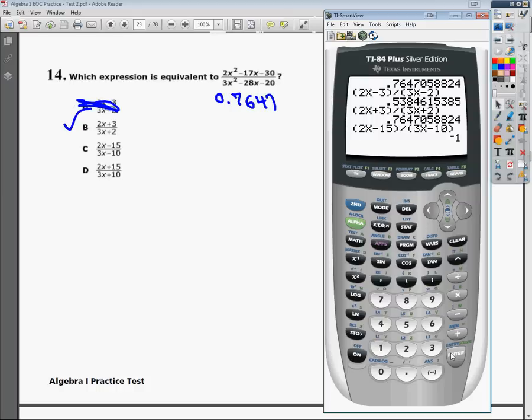See how it doesn't match like it's supposed to? That one doesn't work. I'm going to try one more. 2x plus 15. Divided by 3x plus 10.